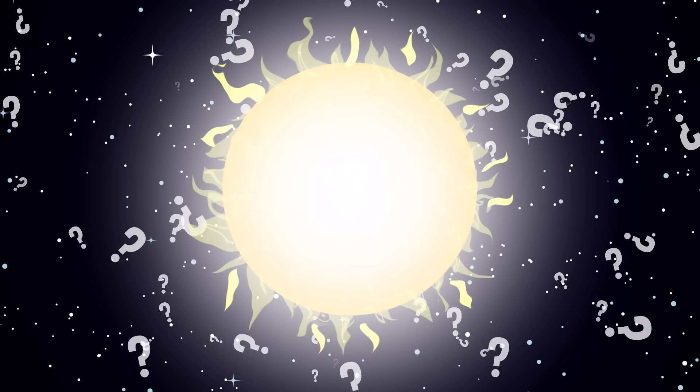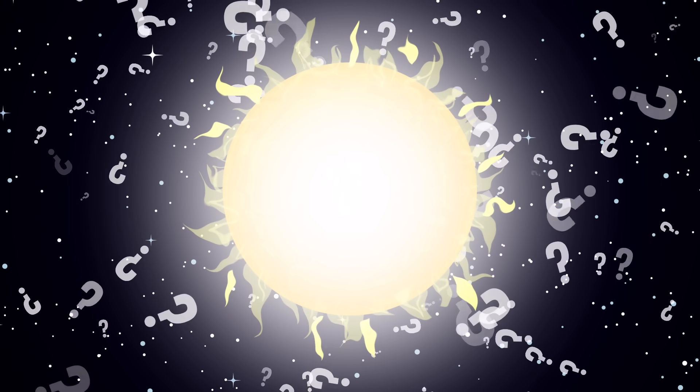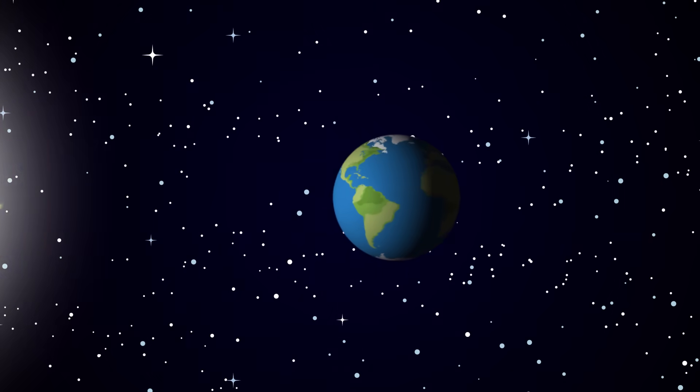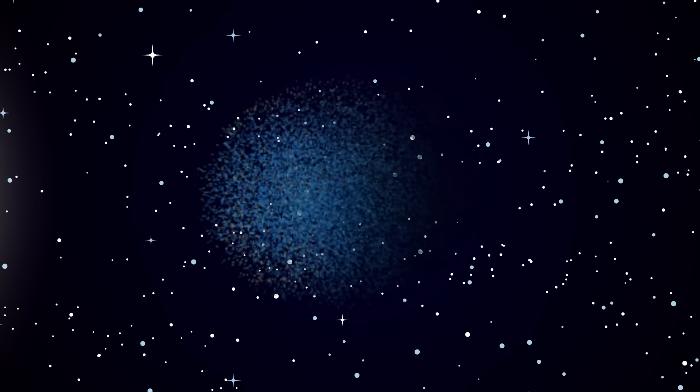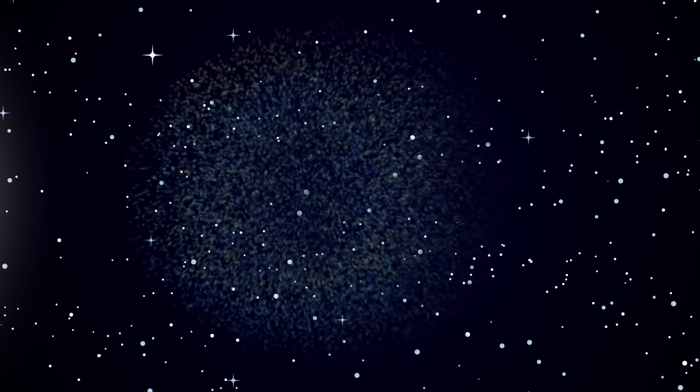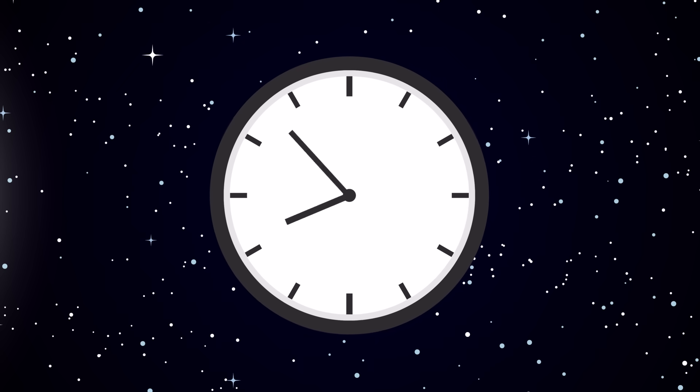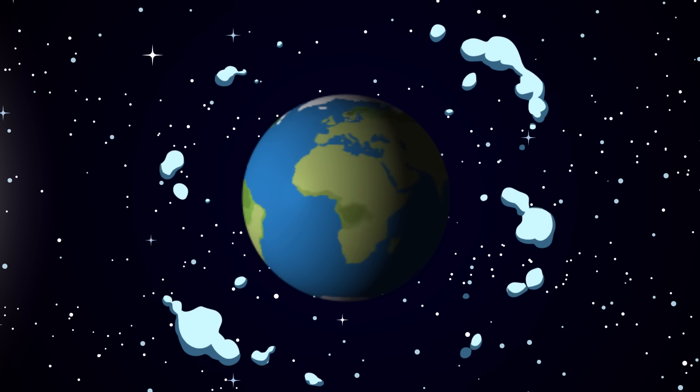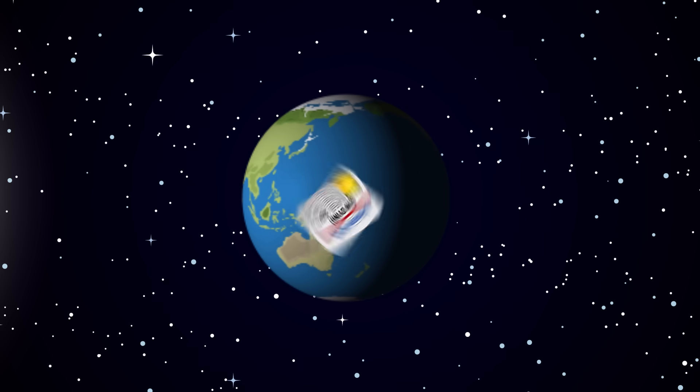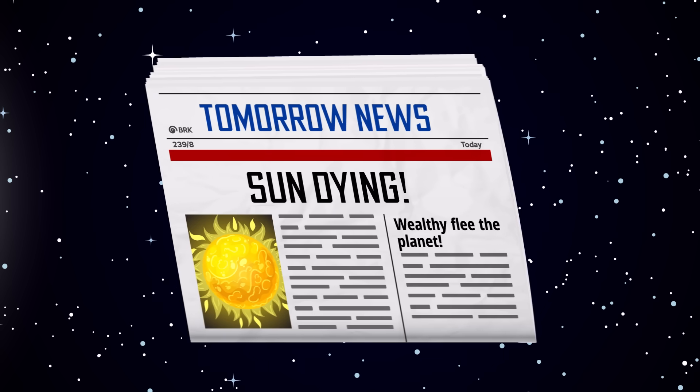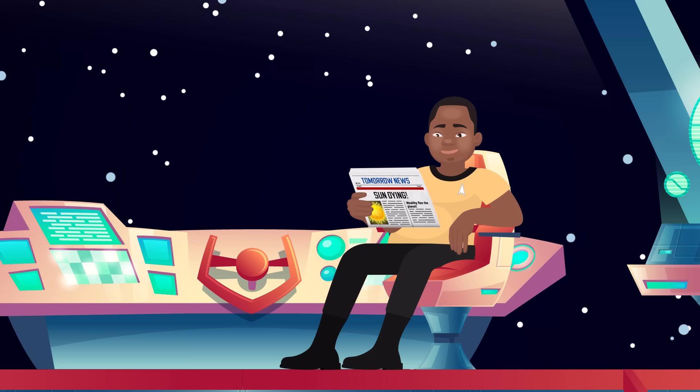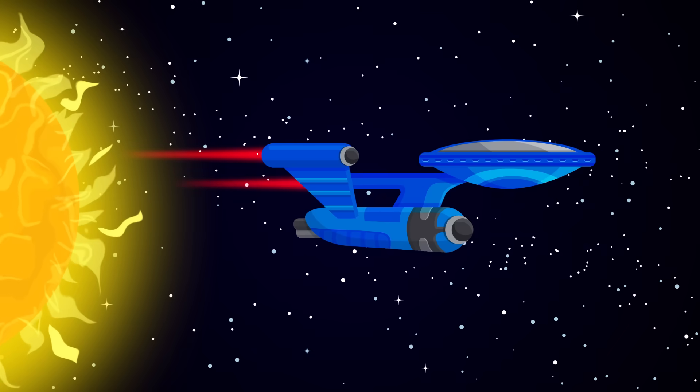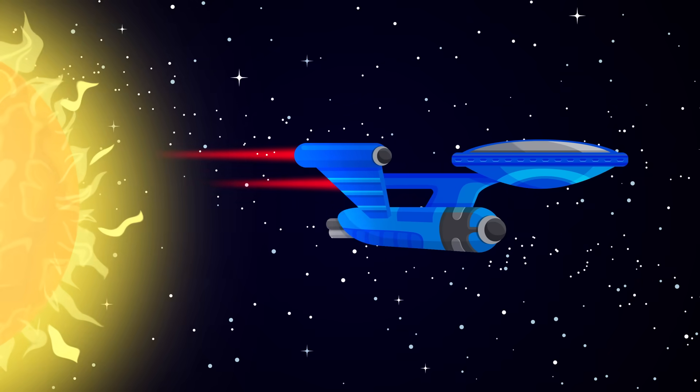So could our sun ever explode into a supernova? Nope, but its eventual death will still be bad news for everything and everyone on Earth. Lucky for us, that won't happen anytime soon. The death of our sun is expected to happen several trillion years in the future. So, scary? Sort of. But unless you plan on sticking around for the next several trillion years, you don't have to spend too much time worrying about the heat death of the universe. There's plenty of time for you to prepare.